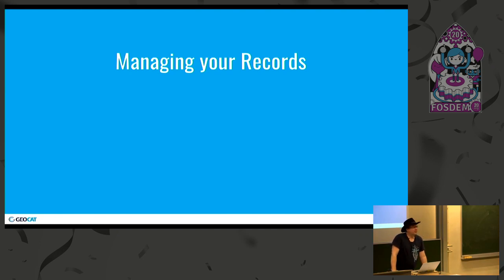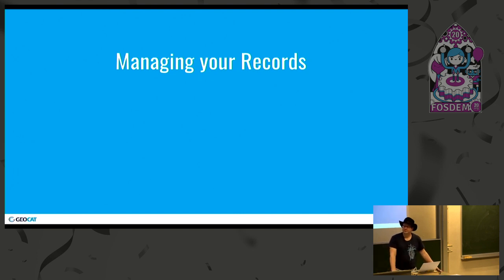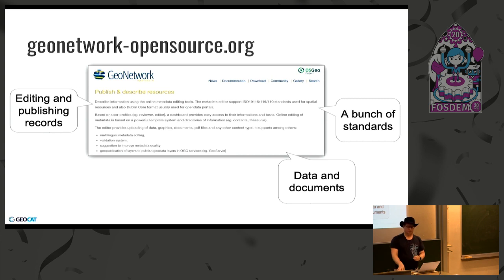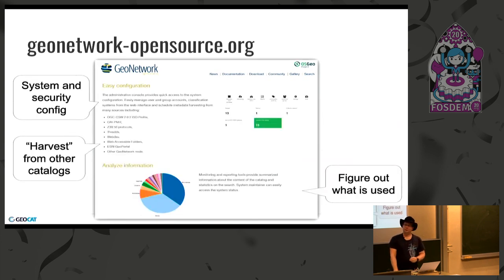Now we're going to pretend we're a data custodian with lots of information we're responsible for. The next part is about editing and publishing your own records. It supports a whole range of standards and can manage both your data and your documents. One nice thing is that it follows OGC standards. You can have catalogs that harvest from other catalogs and bring up all this information to really help with discovery. It's also relatively flexible for configuration and security, with the idea of harvesting from other catalogs, and they also have a lot of analysis available on what data sets and records are actually being used, which is very helpful.